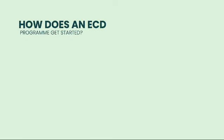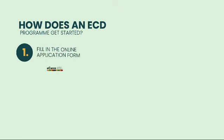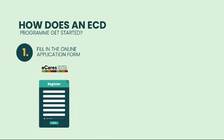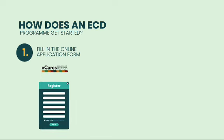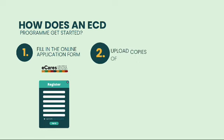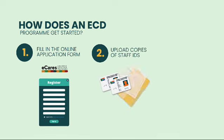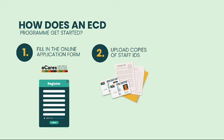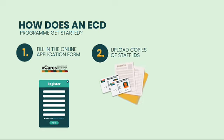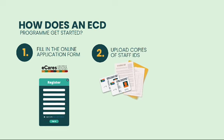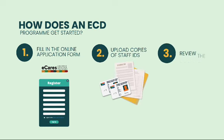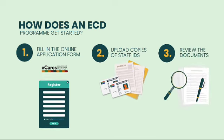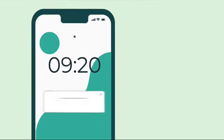How does an ECD program get started? An ECD program uses the provided link to fill in the online application form and the health and safety assessment. They then upload copies of staff IDs and a Form 30 for every staff member so they can be checked against the National Child Protection Register. The Education District will then review the documents, do the National Child Protection Register checks, and approve or reject the application.